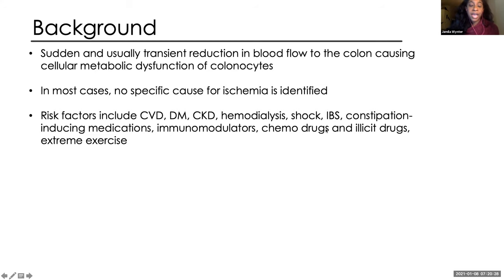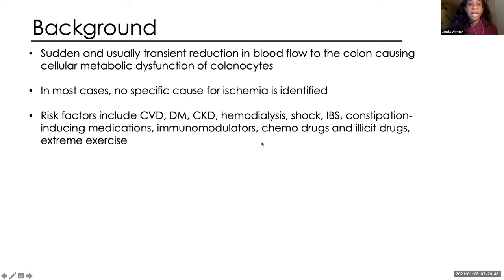There have been reports of IBS being correlated to ischemic colitis, and also many reports on several culprits such as constipation-inducing medications like opioids, immunomodulators such as anti-TNFs, chemo, and illicit drugs such as cocaine. Extreme exercise can also be a risk factor — with intense exercise, there's shunting of blood flow from the splanchnic circulation. It commonly affects the watershed areas, the rectosigmoid junction and the splenic flexure.